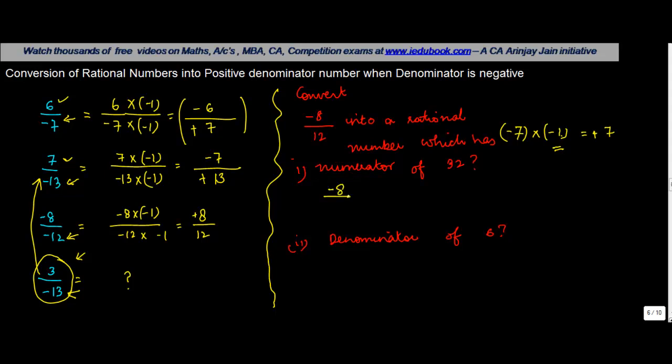If you notice you have minus 8 upon 12, and what I am asking you to do is convert this into a rational number which has a numerator of 32. Now what can 32 be written as? 32 can be written as minus 8 into, by what should I multiply minus 8 to get 32? We know 32 when divided by 8 gives us 4. But to get 32 which is a positive sign, obviously both the numbers have to have the same sign. So if this is minus 8, this has to be minus 4.